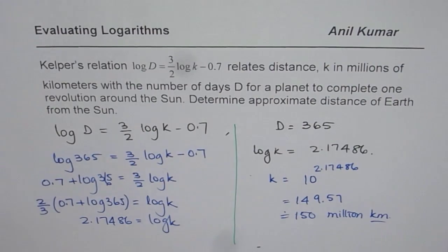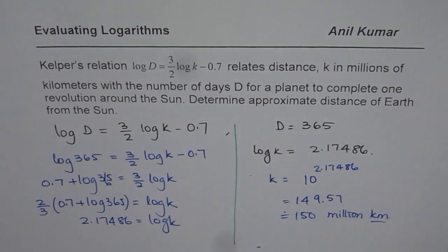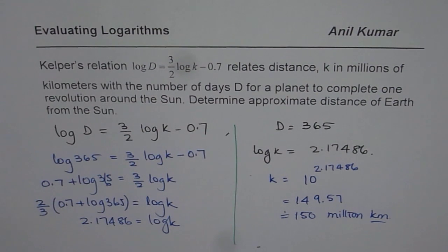So that is the approximate distance of Earth from the sun. And we can easily find it with the help of this excellent equation from Kepler. I think that's a beautiful thing. I hope you all appreciate and understand it.